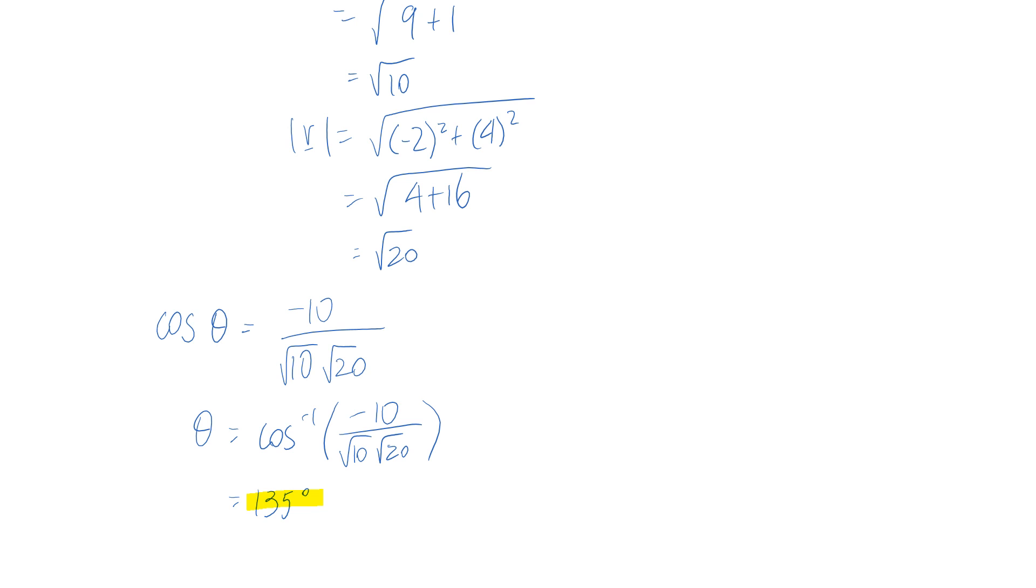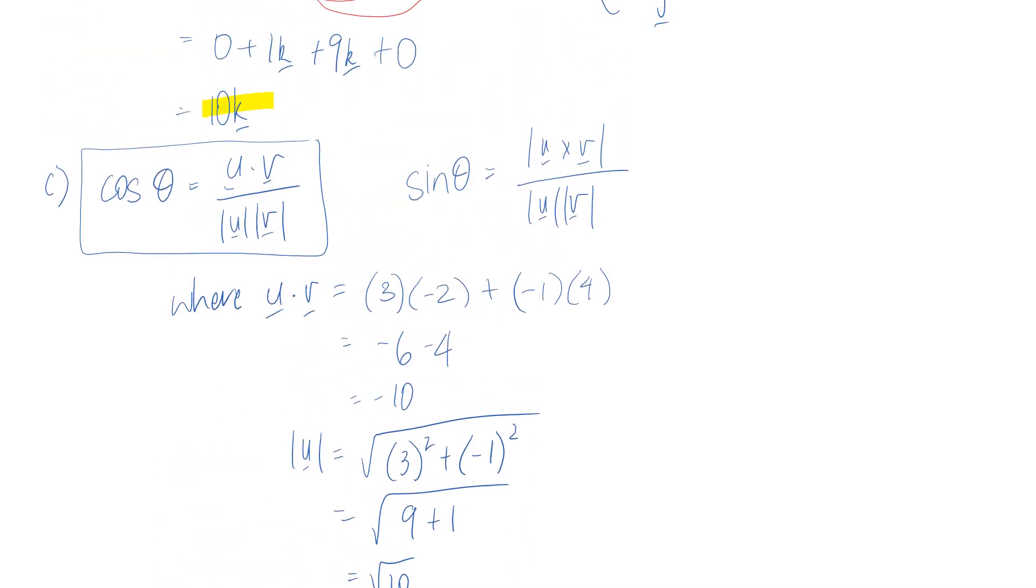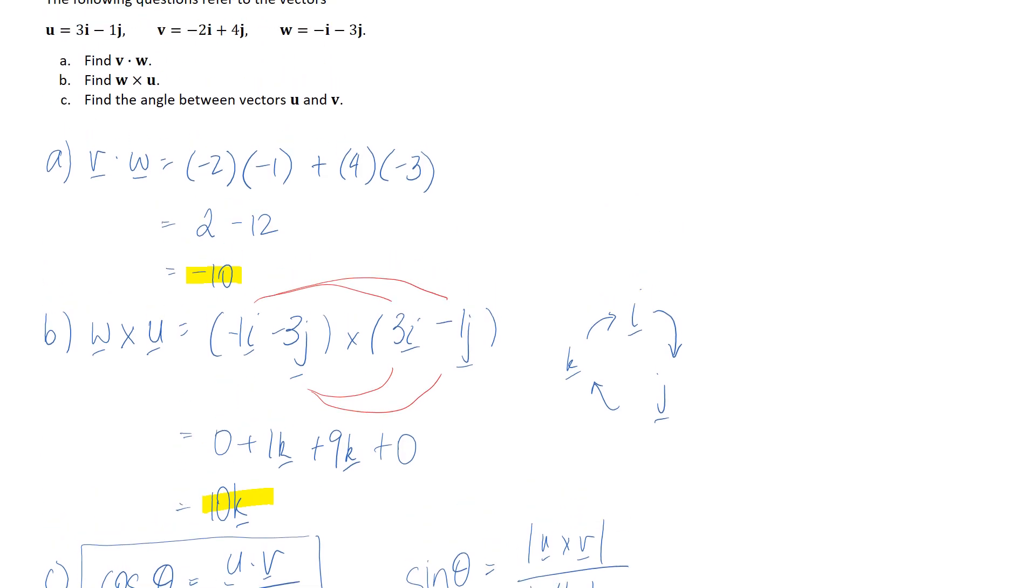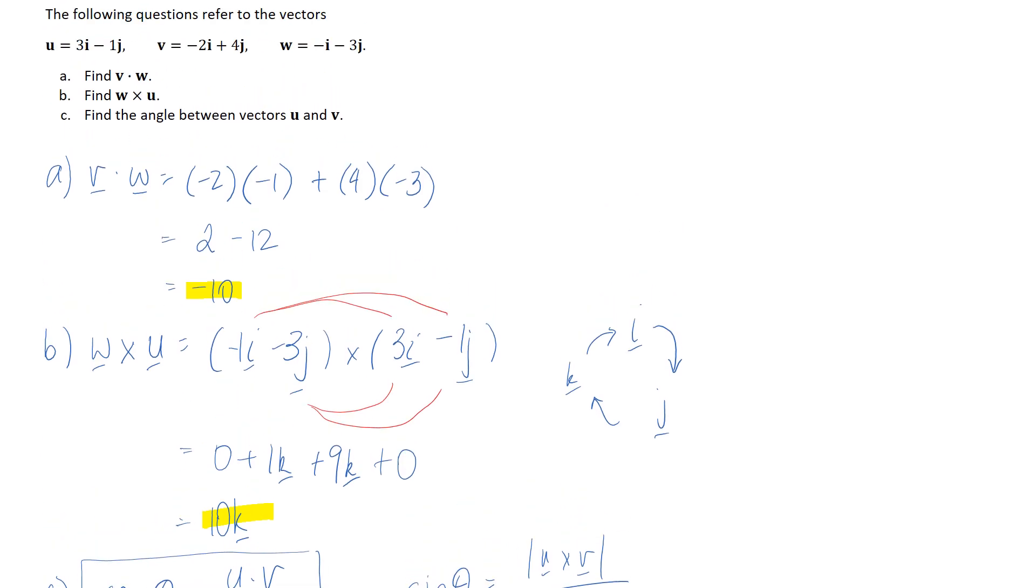So since this is a 2D kind of question like as in our vectors only have an x and a y component we can actually do a bit of a quick sketch to make sure that and this angle kind of looks right visually.